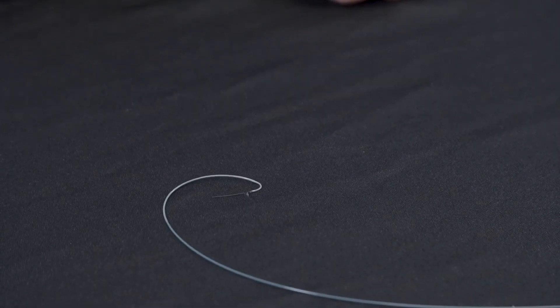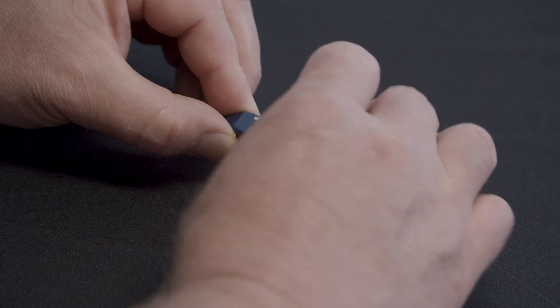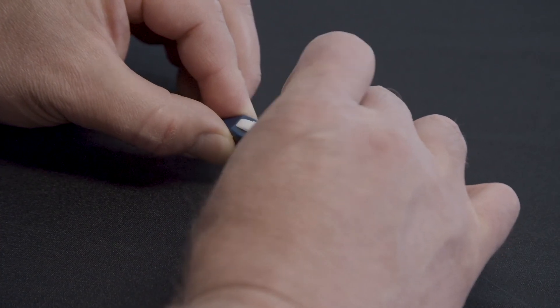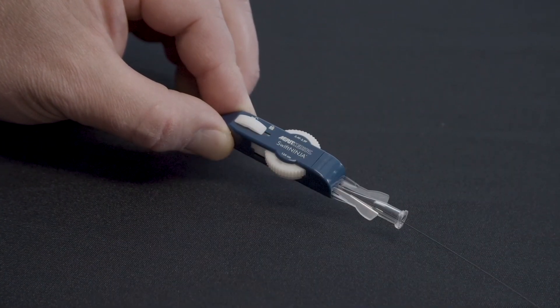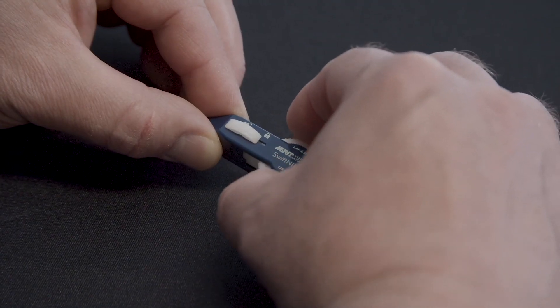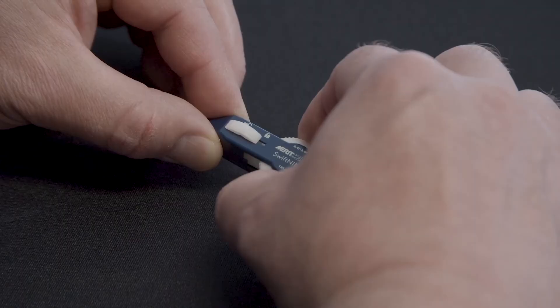To unlock the catheter tip, slide the locking mechanism towards the catheter tip. Be sure to unlock the catheter tip prior to advancing the catheter. When unlocking the catheter, hold the steering dial to maintain the catheter curve. Once the catheter tip is unlocked, rotate the steering dial to reduce the catheter curve to advance over the guide wire.